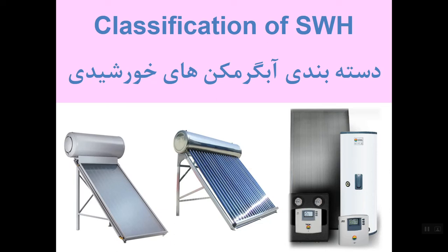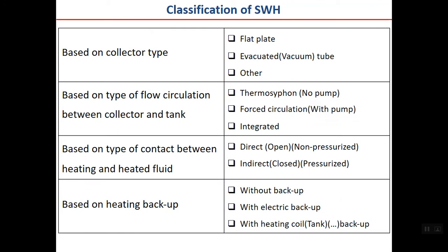Solar water heaters can be classified in four categories: based on type of collector; based on type of flow circulation between collector and tank; based on type of contact between heating and heated fluid; and based on heating backup. Let's start with collector type.